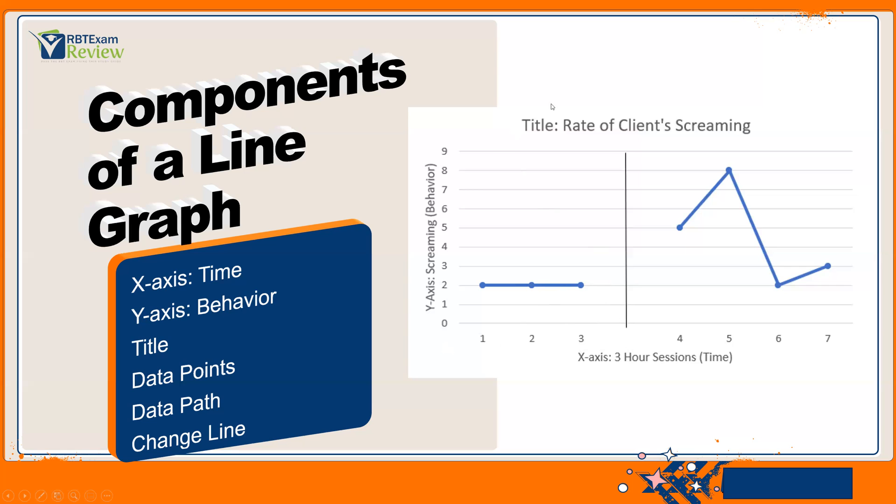You need your title, which is up here, the rate of client screaming. You need your data points, which are these little dots. You need your data path. Connect those dots. So you have your little line, hence a line graph. It's showing you all the trends and the variabilities and the levels of the data, which we're about to go over.